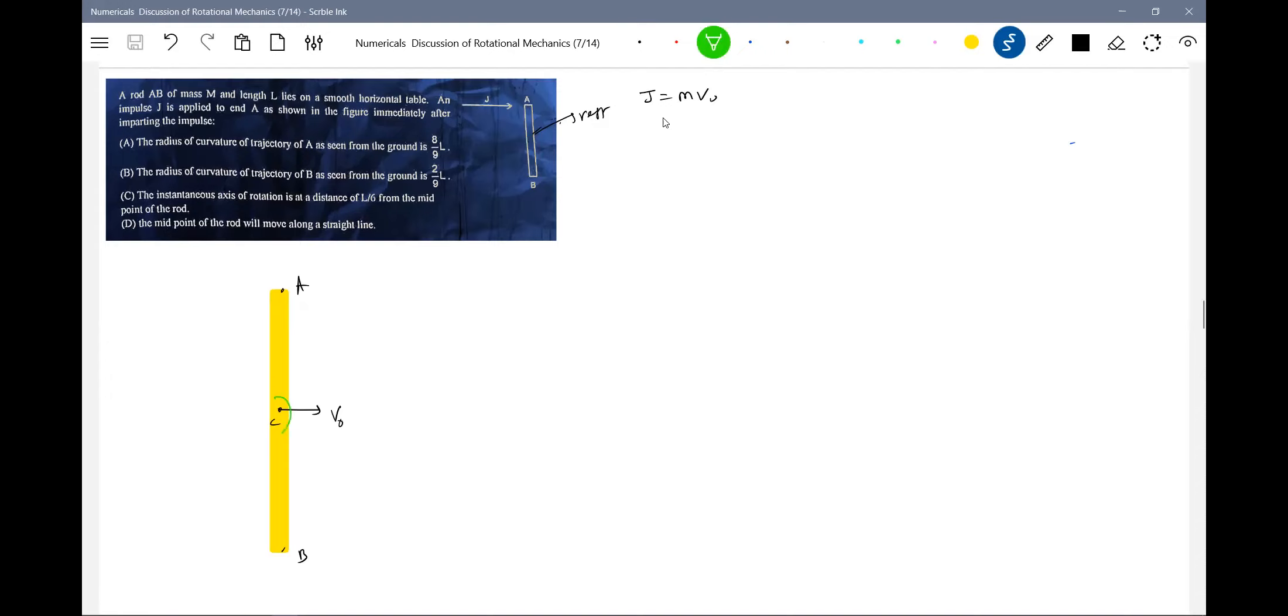So here we'll bring omega naught. Then the equation will be J into l by 2 equals ml square by 2 omega naught.